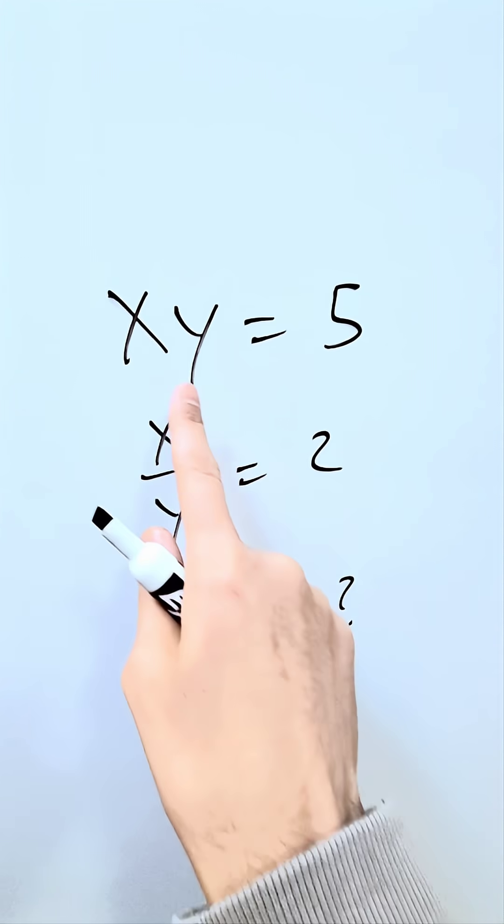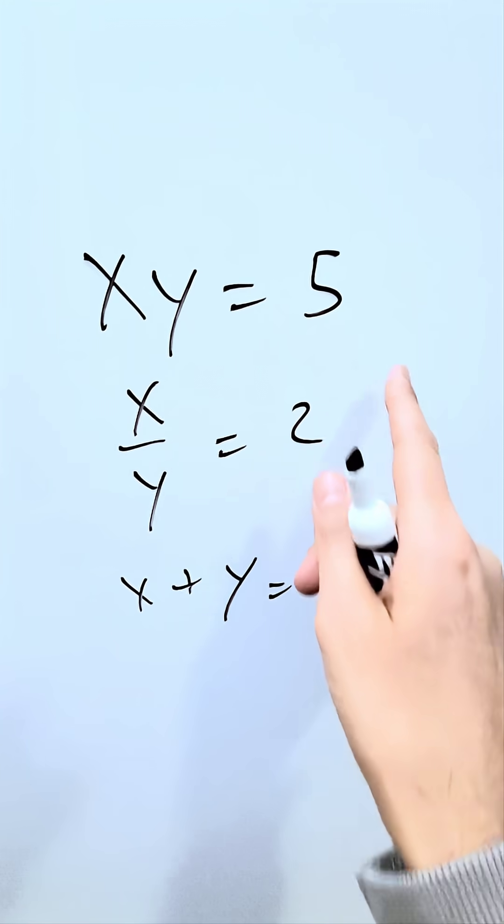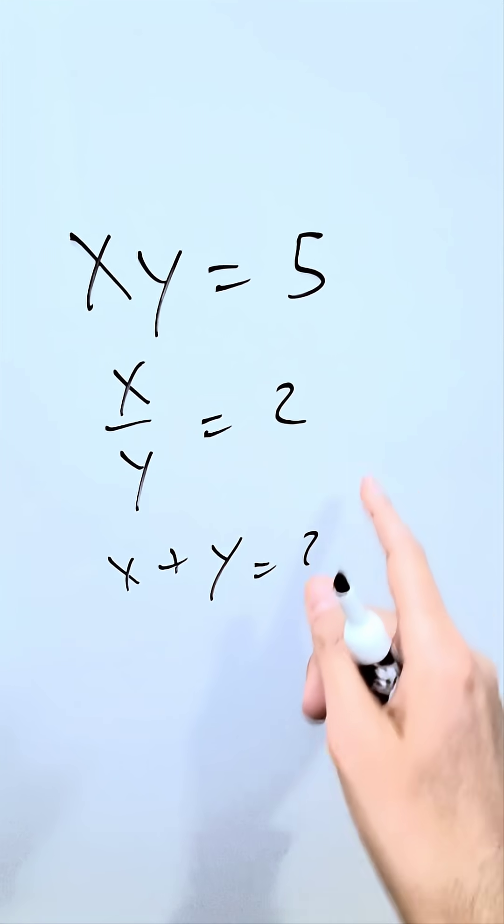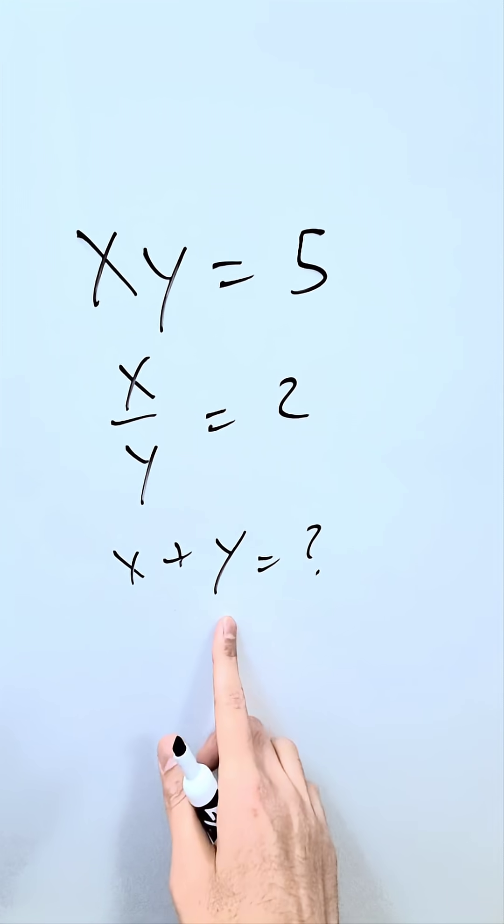A question from Algebra: the product of two variables, x times y is equal to 5, the quotient of those variables, x over y is equal to 2. What is the sum of those variables?